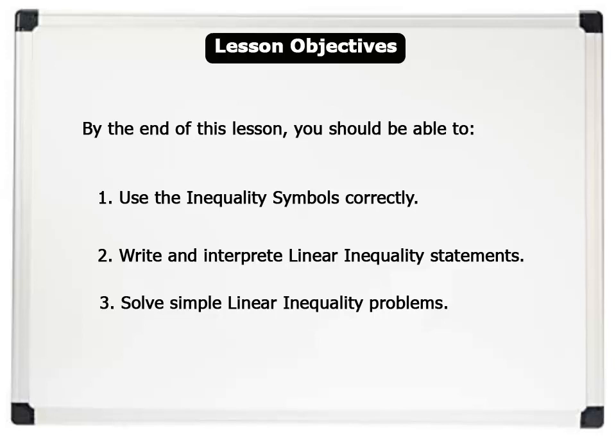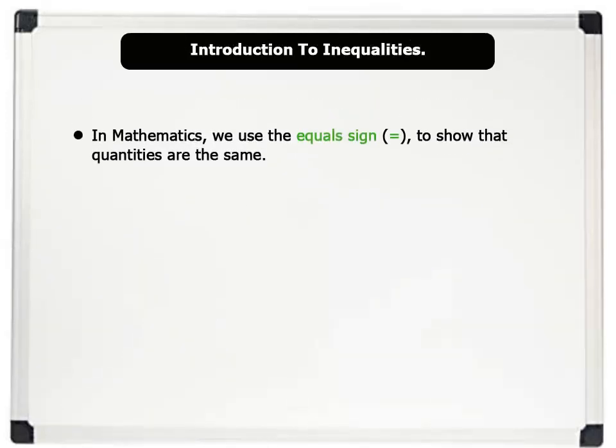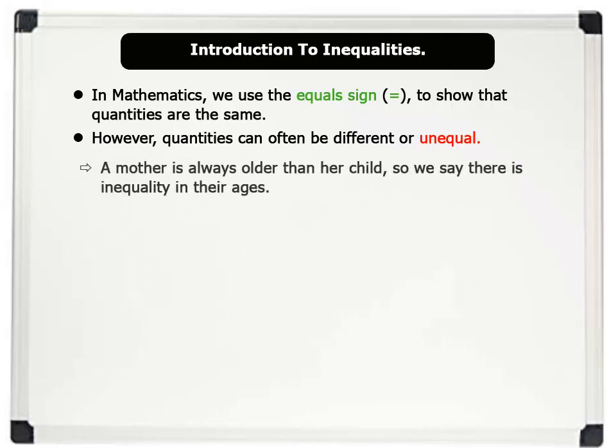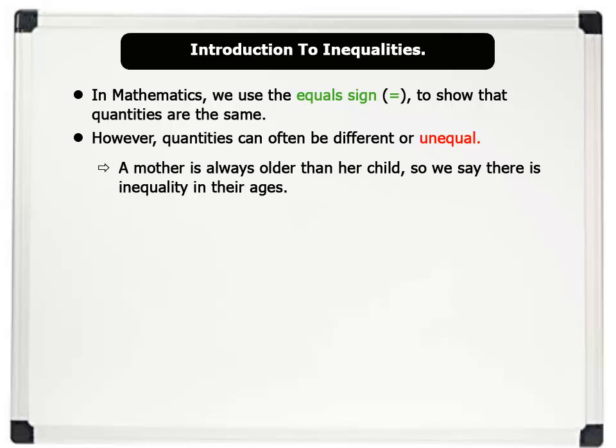Now let us begin. In mathematics we use the equal sign to show that quantities are the same. However, quantities can often be different or unequal. For example, a mother is always older than her child, so we say there is inequality in their ages.